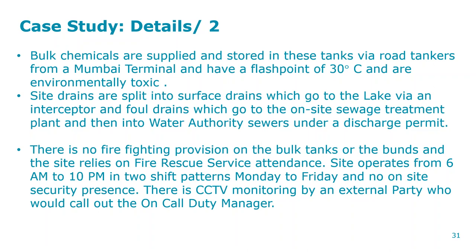The site drains are split into two types: surface drains that take water to the lake via the interceptor — a unit that separates oil and water based on differences in specific gravity — and foul drains that go to the sewage treatment plant and then to the water authority. Regulations are quite specific for chemical factories about where you can discharge product — not into rivers or lakes, otherwise people's health will be affected.